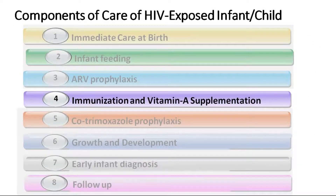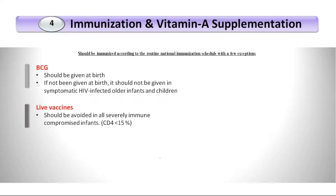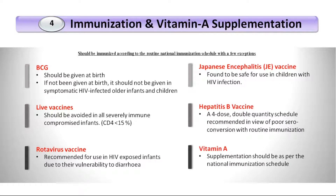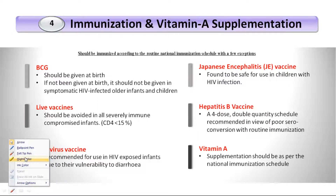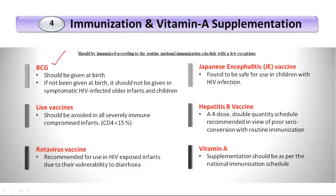The next topic is immunization and vitamin supplementation. Can we give vaccines to the HIV-exposed baby? Generally, immunosuppressed children should not receive live vaccines. However, at birth we do not know whether the baby is immunosuppressed, and BCG stimulates cell-mediated immunity, so there is no harm in giving it. BCG can be given safely at birth even though it is a live vaccine. If not given at birth, it is better not to give it later, as immunosuppression may have occurred. BCG should definitely not be given if the child is symptomatic — symptomatic HIV is a contraindication for all live vaccines — or if CD4 count is less than 15%.